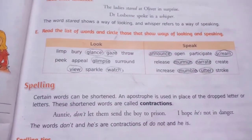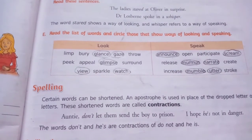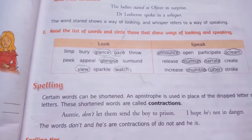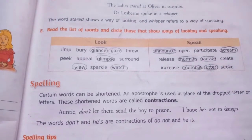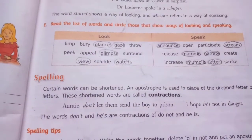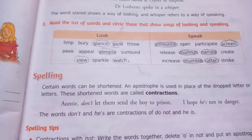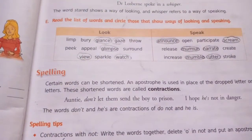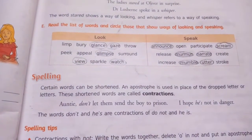Now speaking ways: Announce — yes. Open — no. Participate — no. Scream means chillana — yes, it is a way of speaking. Release — no. Murmur means speak softly — yes. Narrate means kissa sunana, kahani sunana — it is also a way of speaking. Create — no. Increase — no. Mumble also means speak softly — yes. Utter means kuch kehna — yes. So the ways of speaking are: announce, scream, murmur, narrate, mumble, and utter.